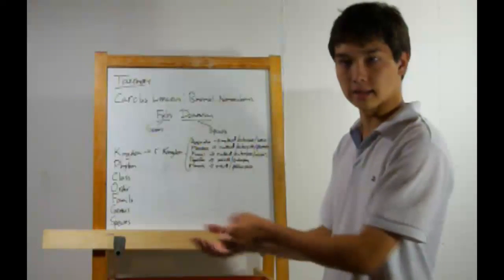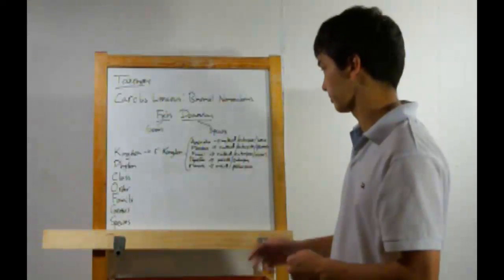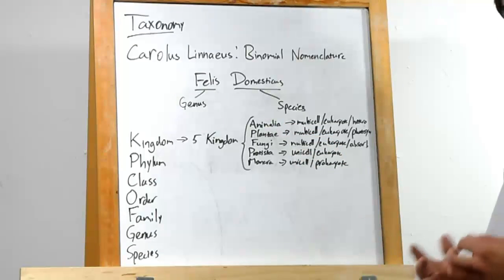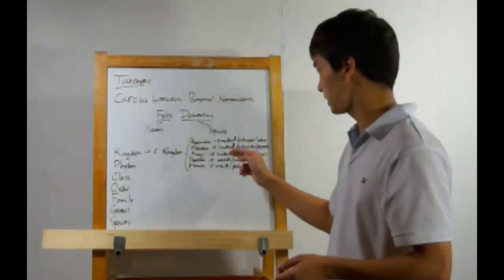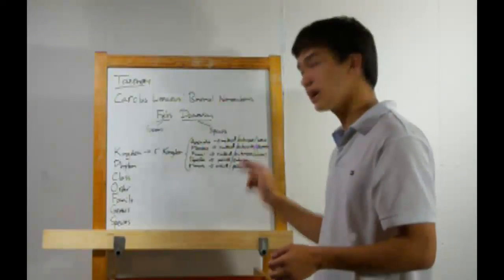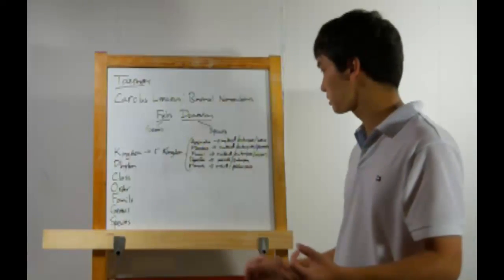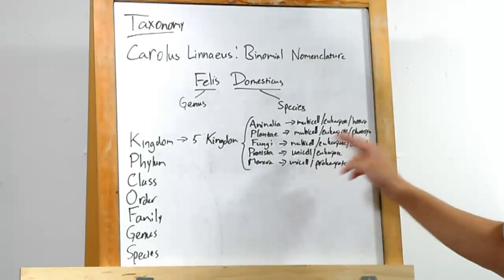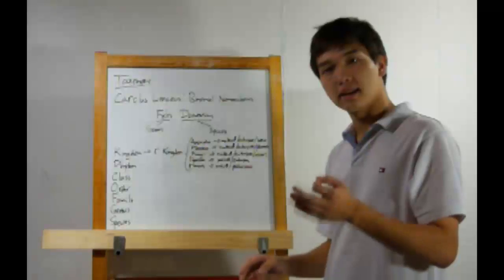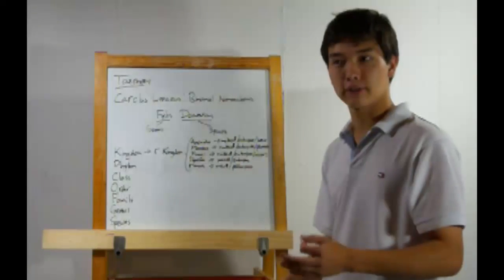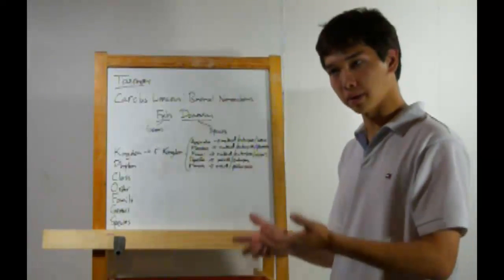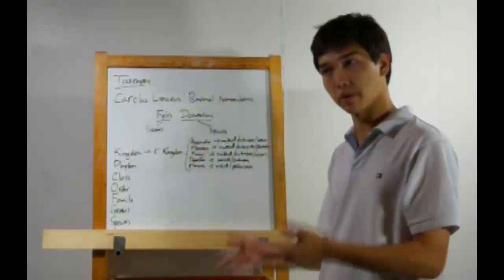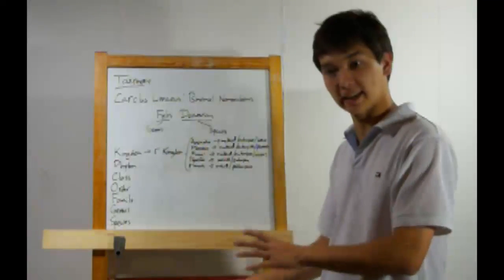Animals go and catch their food. Plantae — plants — multicellular, eukaryotic, and these all perform photosynthesis. Fungi: multicellular, eukaryotic. These ones are heterotrophic, but they absorb their food as opposed to catching it. They usually grow out of it and then just take it in.